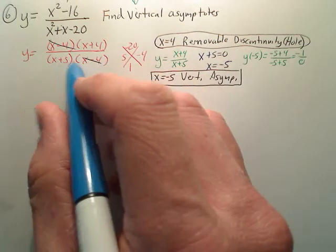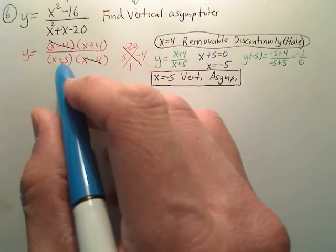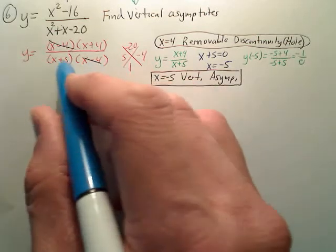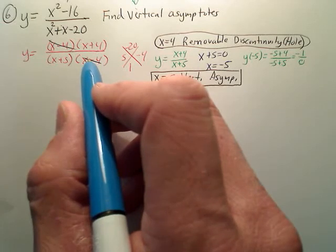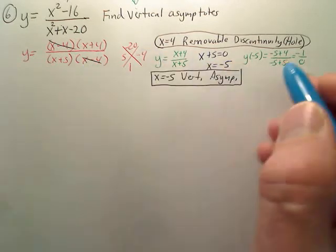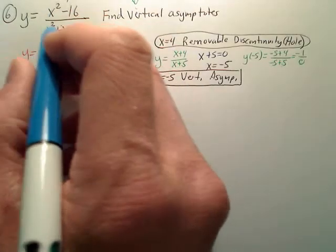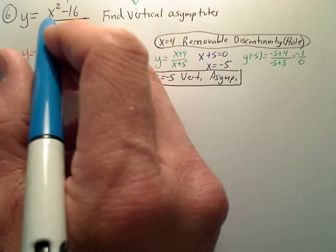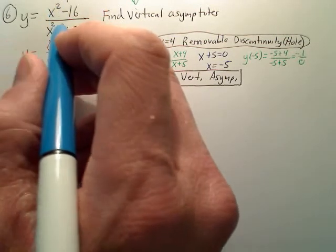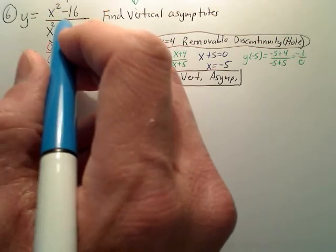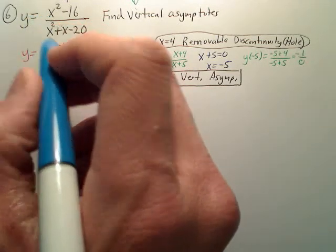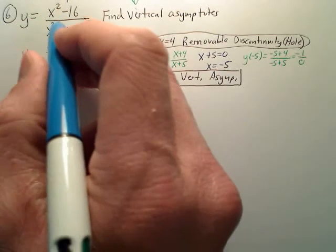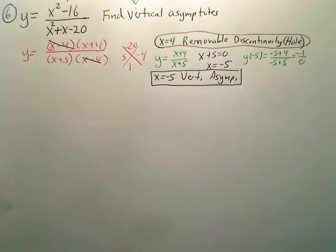Now, right off the bat, you could have just solved the bottom and set both factors equal to 0. When you plug in negative 5, you get a number over zero. But if you had plugged 4 into the original equation, you would have got 0 over 0, called indeterminate, which means you do not have a vertical asymptote there. Whenever you get 0 over 0, it's usually a hole.